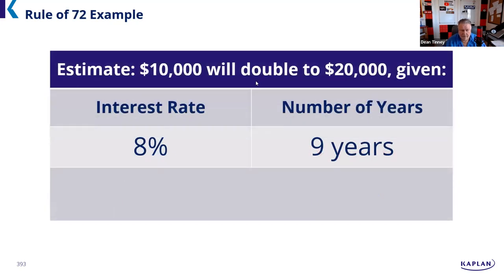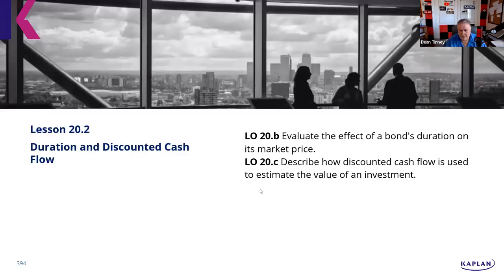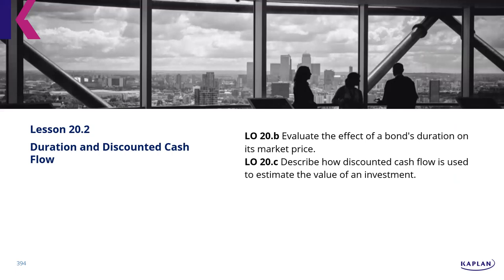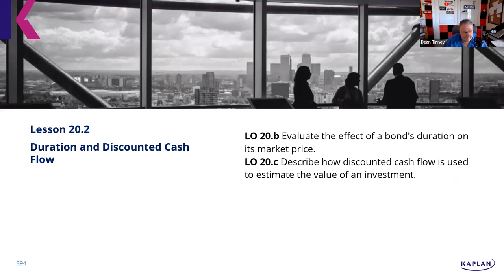For example: estimate how long $10,000 will take to double at 8%. Using the rule of 72, we divide by 8 and come up with 9 years — which aligns with what we showed earlier. A lot of people freak out with this. Are you familiar with the teeter-totter seesaw? That's for bonds, right — where we look at the relationship of a bond trading at a discount or at a premium and where the yields are in relation to each other.